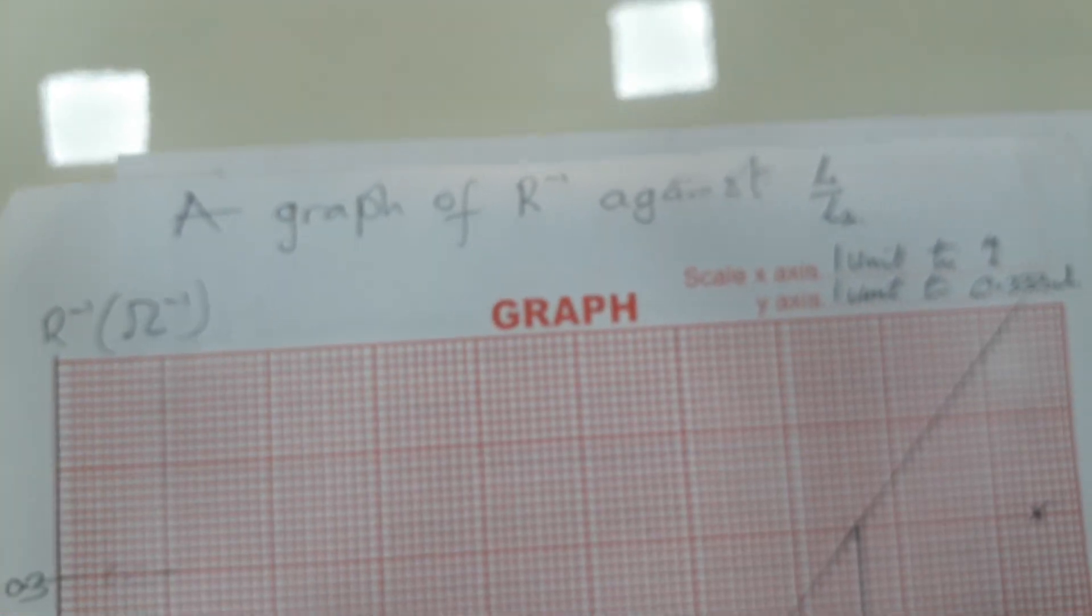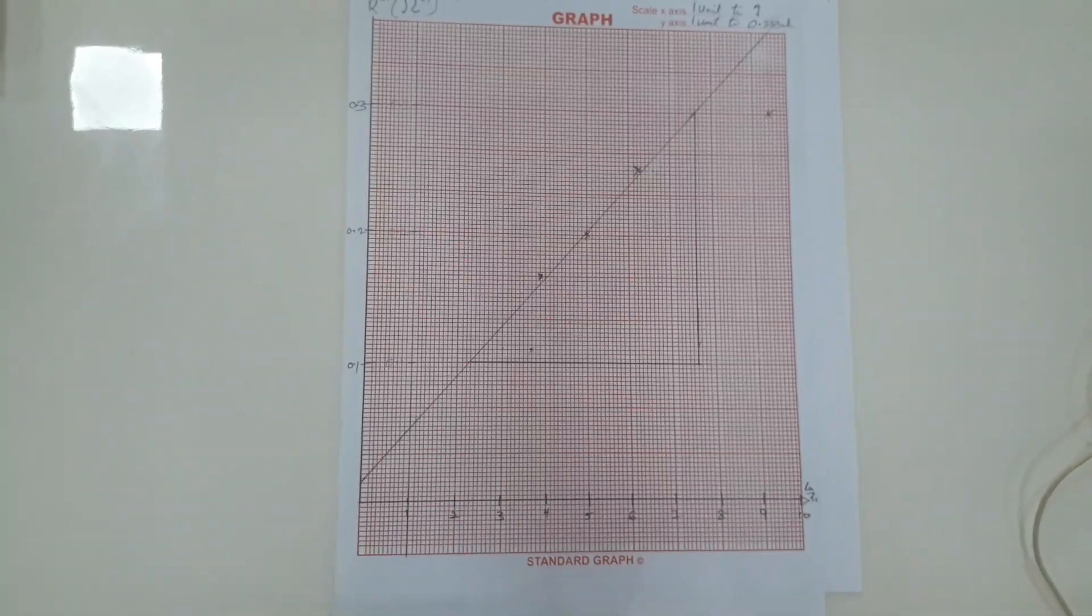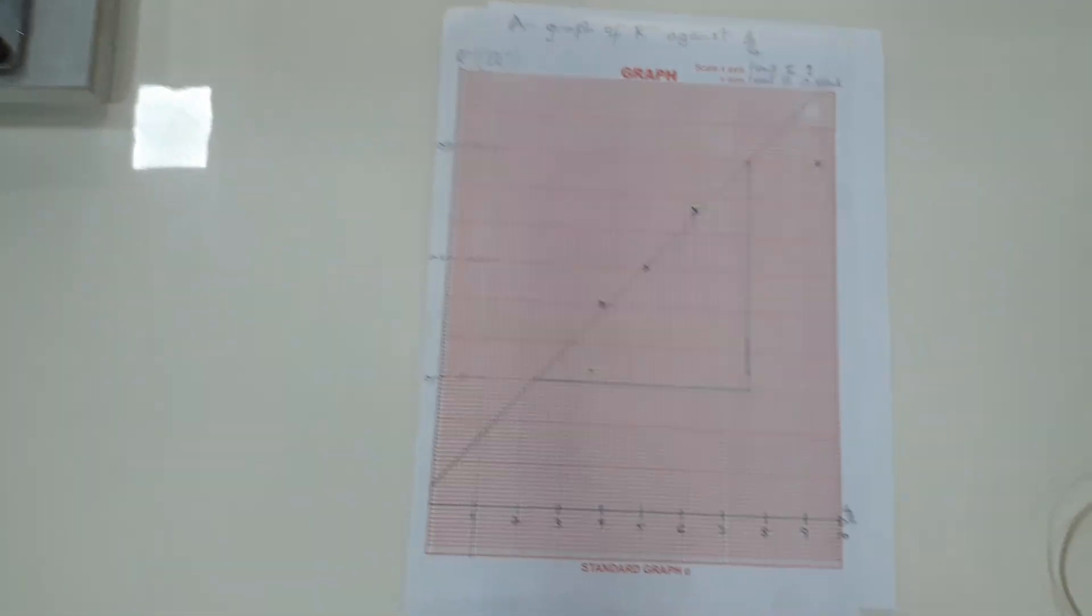This is the graph, it is a linear graph, and the gradient of that graph, the inverse of the gradient of the graph will give us the internal resistance that we are measuring.